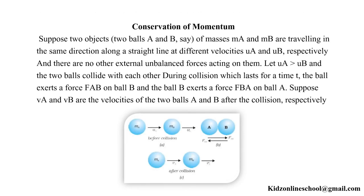Conservation of momentum. Suppose two objects of masses MA and MB are travelling in the same direction along a straight line at different velocities UA and UB respectively, and there are no other external unbalanced forces acting on them. Let UA be greater than UB, and the two balls collide with each other during a collision which lasts for a time t. Ball A exerts a force FAB on ball B, and ball B exerts a force FBA on ball A.